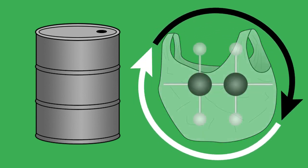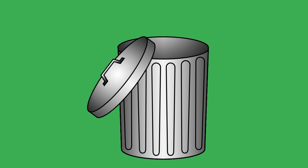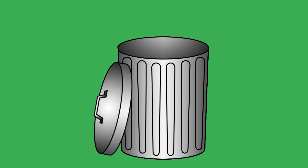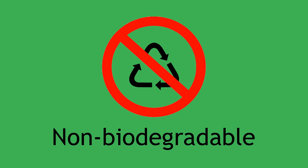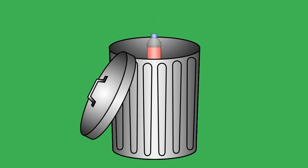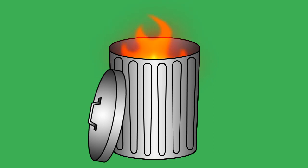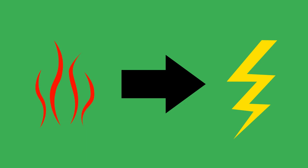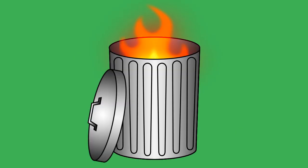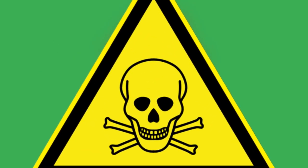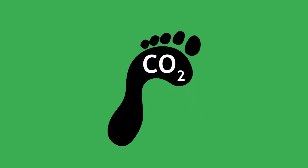There are also big problems associated with the disposal of polymers. The biggest problem, as mentioned above, is that polymers are non-biodegradable, which means that microorganisms cannot naturally break them down. Disposal of polymers by burning or incineration is a possibility, as this generates heat which can be used to generate electricity. However, the burning of polymers produces many toxic gases which can damage the environment and cause pollution.